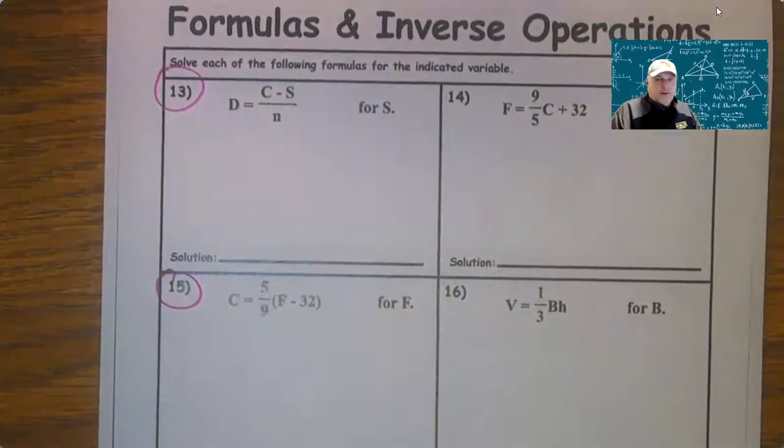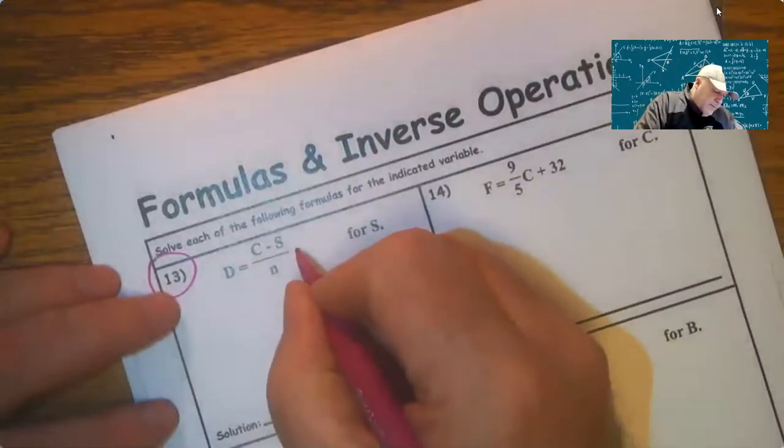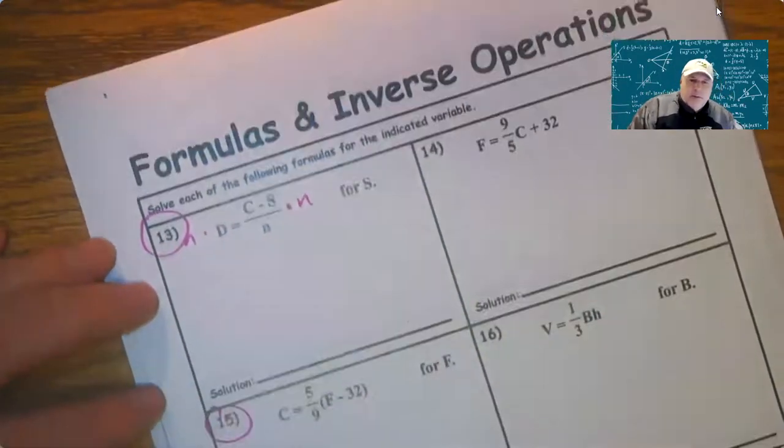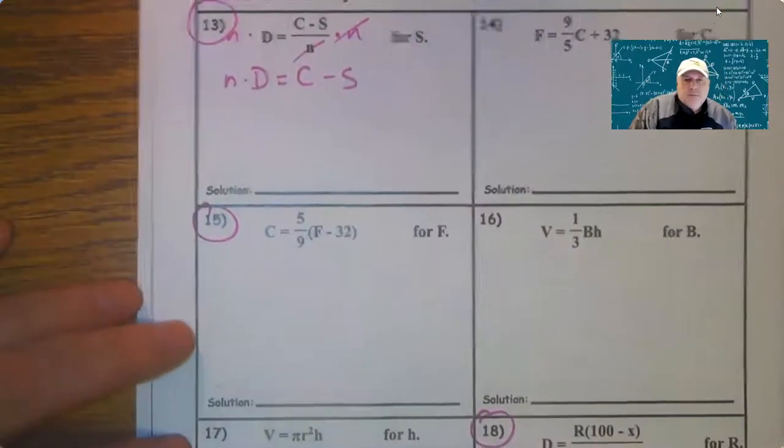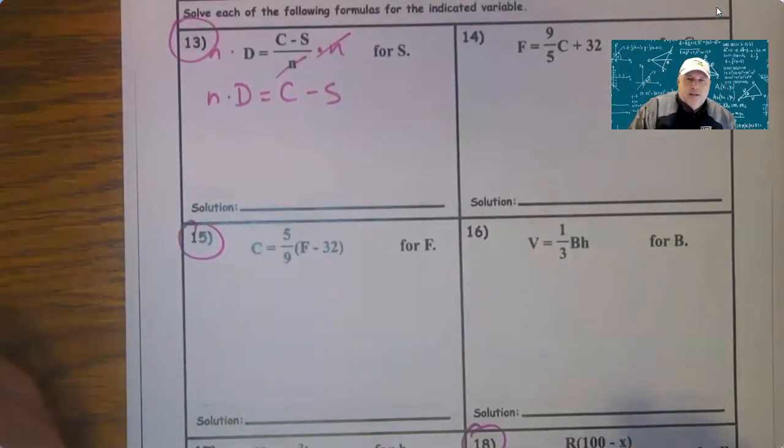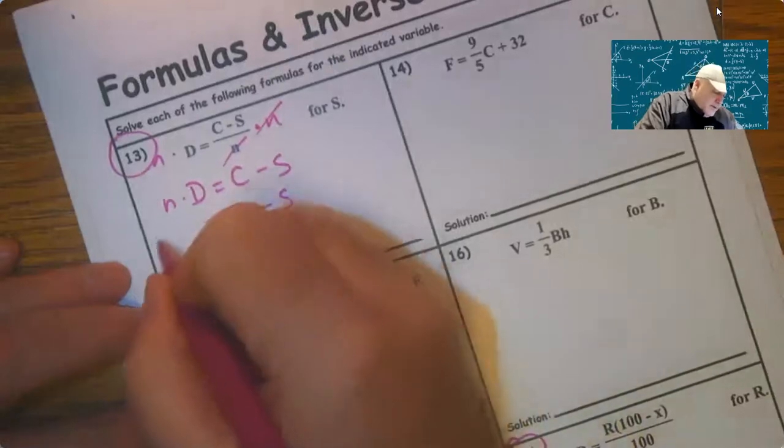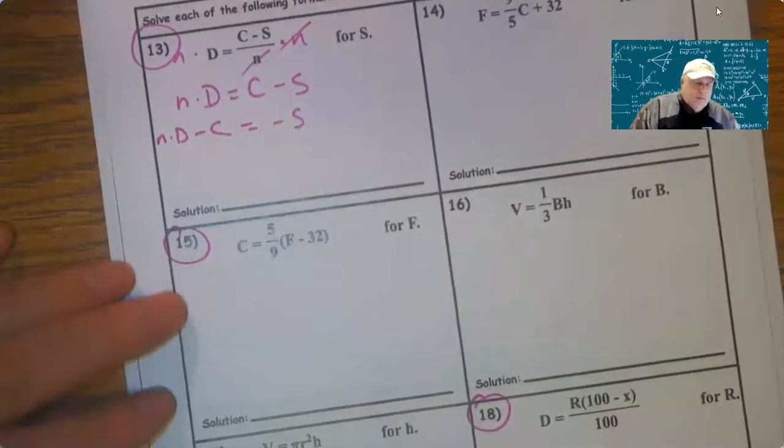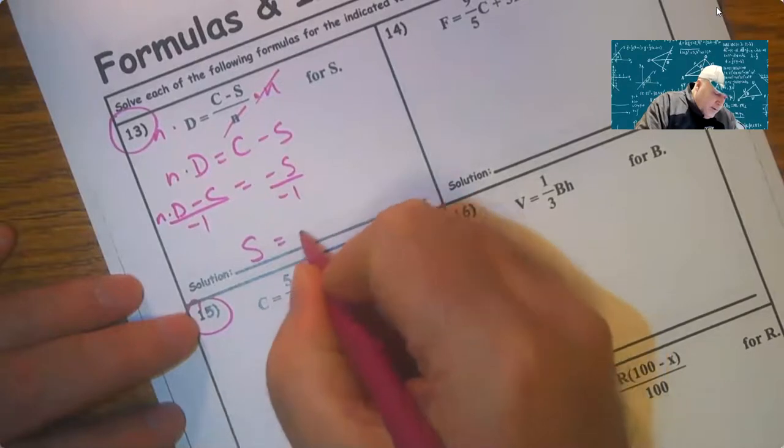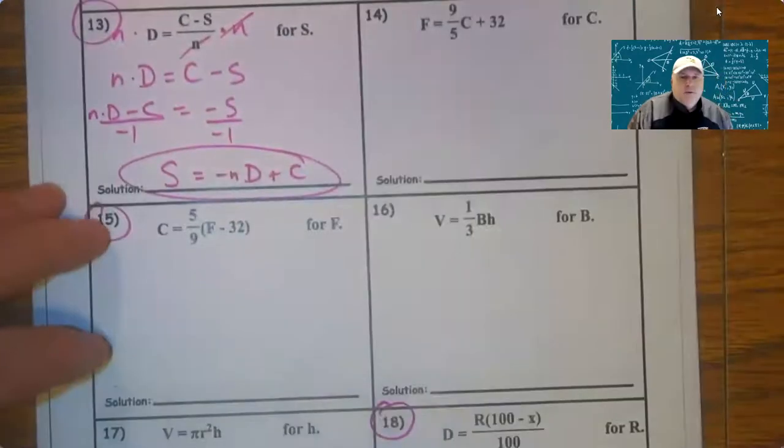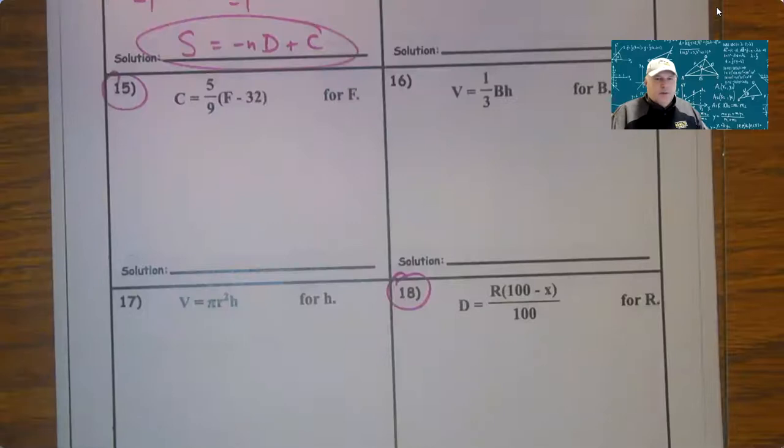They get a little bit harder as we progress through this, but you follow the same list of rules. So solve for S. We don't think about anything. We've got to eliminate this denominator of N. Multiply to eliminate parentheses, then eliminate denominators. So N times D equals C minus S. Now we want to isolate the term that contains variable S, and so that's negative S. So it's N times D minus C. We've got to subtract C over to the left and then divide by negative one everywhere. You just make the signs opposite in doing that.